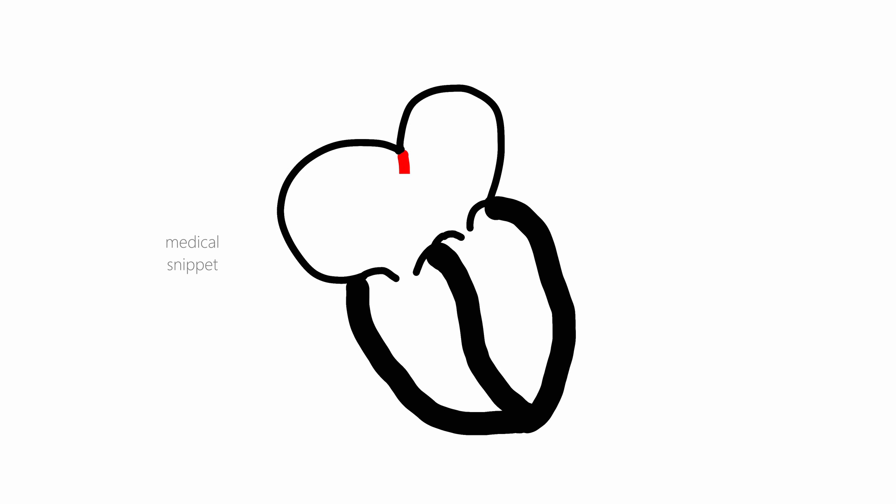In this video, the development of the interatrial septum will be discussed. The interatrial septum is the structure that divides the primitive atrium into the right and left atrial chambers.